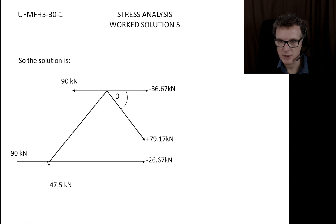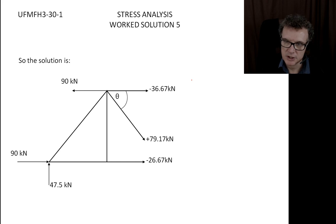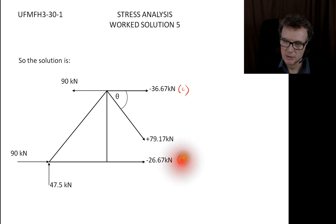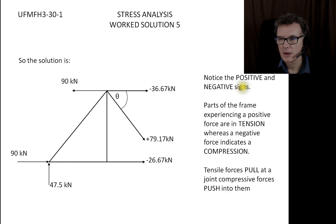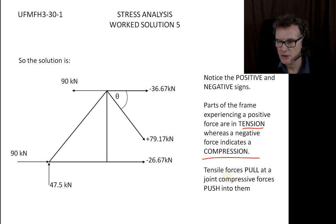So there's the final solution. Label up the results as compressive or in tension: BC is compressive, FE is compressive, and BE is in tension. Remember: positive result means tension (member being pulled apart) and negative result means compression (member being pushed together).